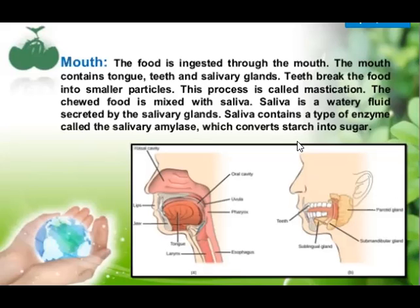By the digestion process, starch is converted into sugar, and this conversion is carried out with the help of an enzyme present in the saliva known as salivary amylase. It is the enzyme which is present in the saliva.